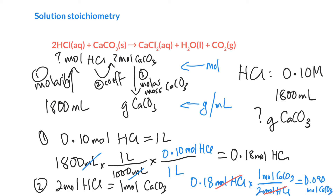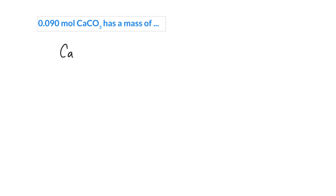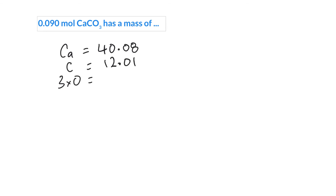We need to figure out how heavy 0.090 moles of calcium carbonate is going to be, so we need to calculate its molar mass. We have one calcium (40.08), one carbon (12.01) — helpful to commit to memory — and three oxygens (16.00 each). Adding those up gives us the molar mass of CaCO₃.